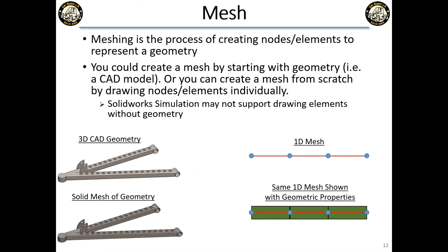Meshing is the process of creating nodes and elements to represent geometry. You can create a mesh from CAD geometry or from scratch by typing node coordinates, connecting them, and defining cross-sectional properties. In some programs, you can create one long element and split it into ten. You can also do linear patterns, radial patterns, and copy-paste elements, which is useful for iterating bracket sizes without changing the CAD model.